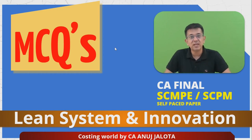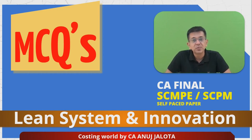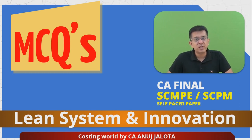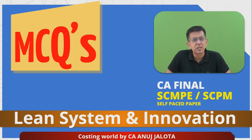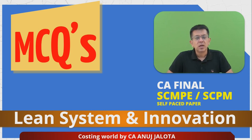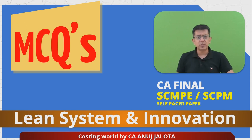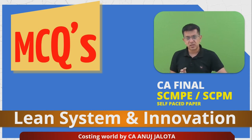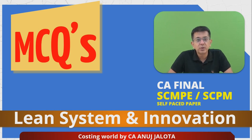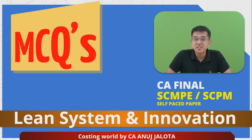Welcome to CA Final SCMP. We are doing a chapter called Lean System and Innovations. A company should always try to avoid waste — and waste is not only in physical form. Waste could be waste of the time of workers, or unnecessary activities you are doing to make your products. If you are following that philosophy, we say we are trying to have a lean system.